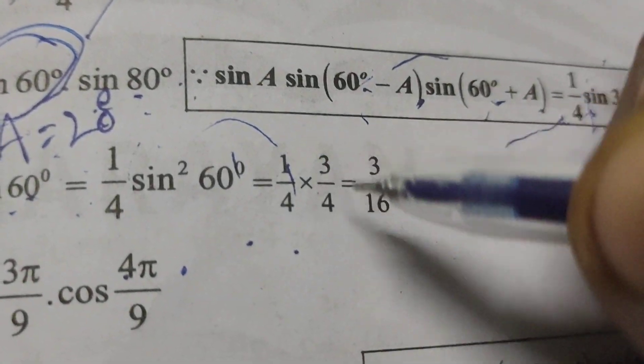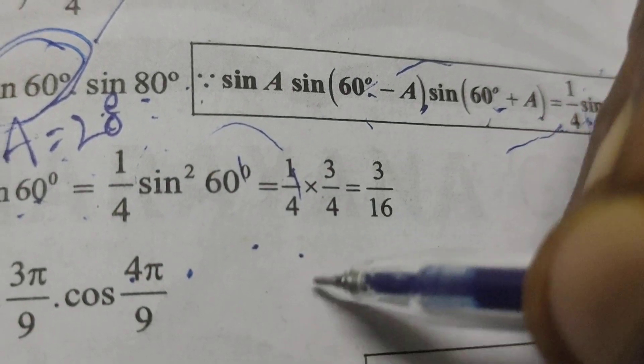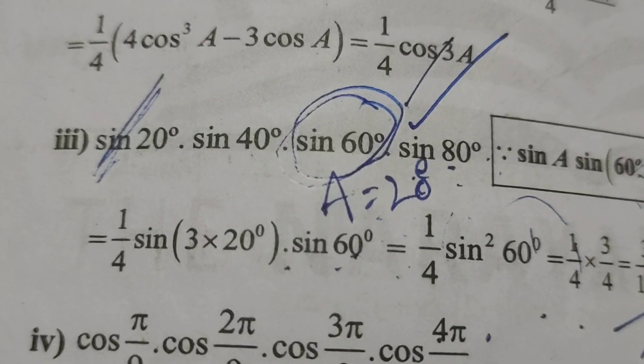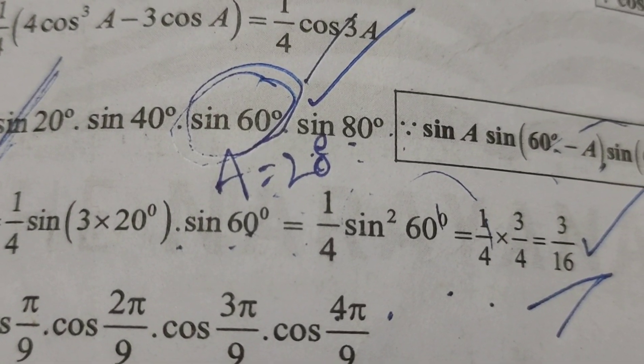What is sin 60°? Root 3 by 2. Squaring gives 3 by 4. Therefore, 1/4 times 3/4 equals 3/16, which is the solution to this trigonometric problem. Thank you.